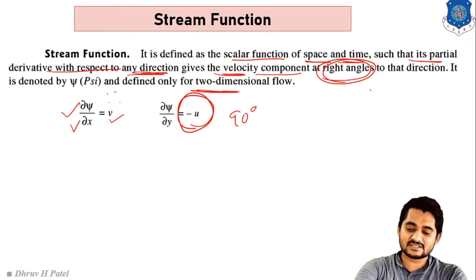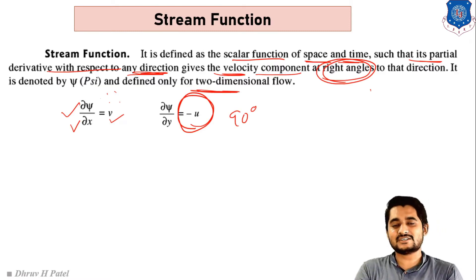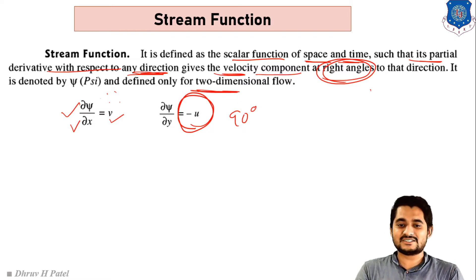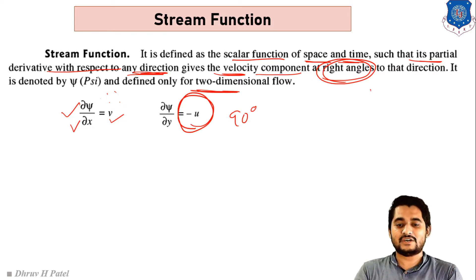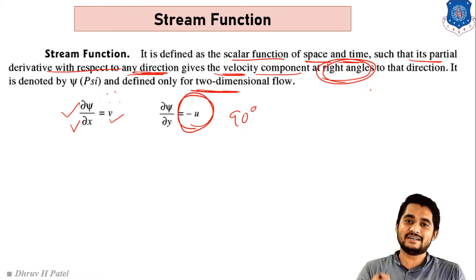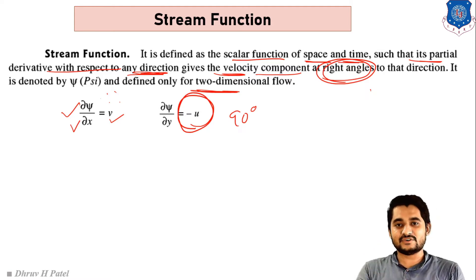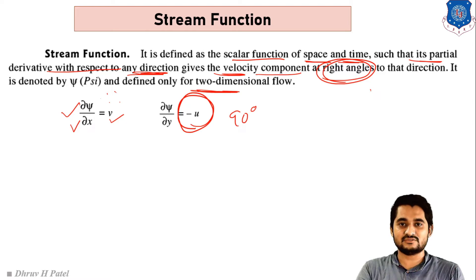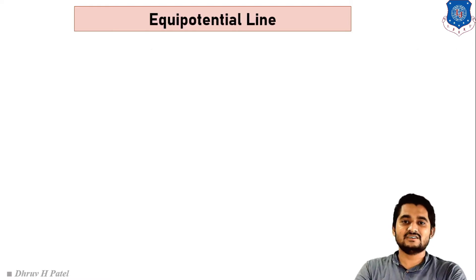We have learned the equations and definitions of velocity potential function and stream function, but we have not yet covered the practical aspect. The practical application relates to path line, stream line, stroke line, and stream tube studied at the start of this chapter. I will put a link in the description for the practical application of velocity potential and stream function, but first try to find it yourself.